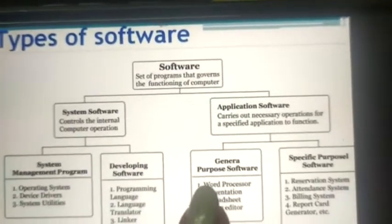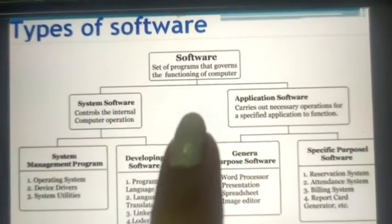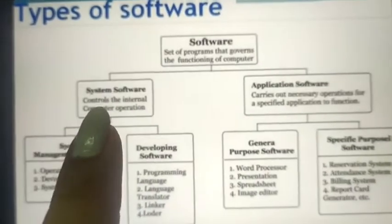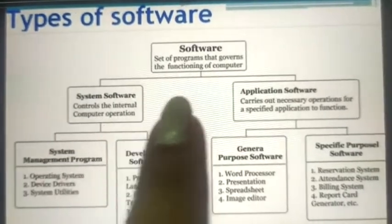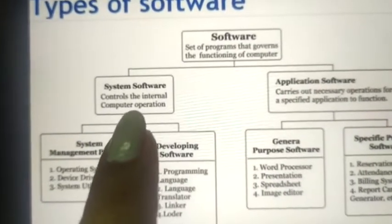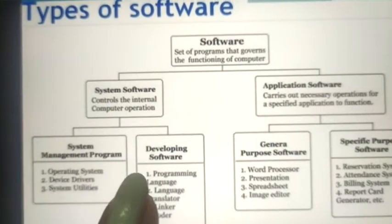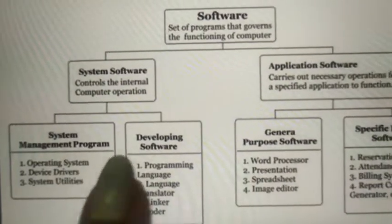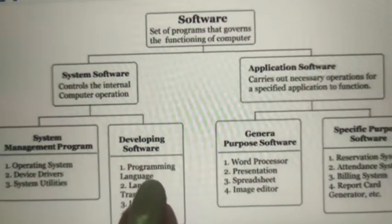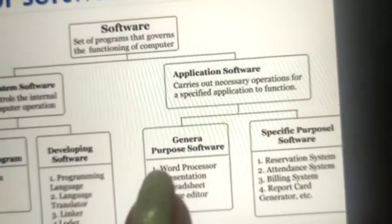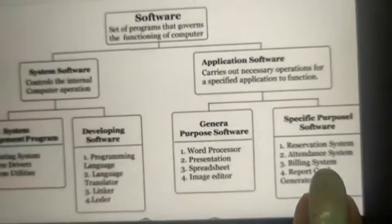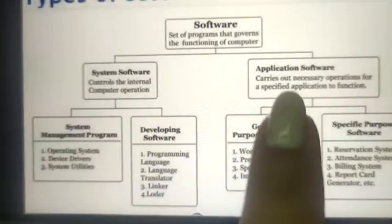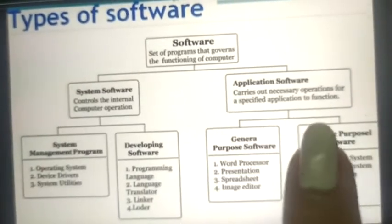You can see this diagram and easily understand how many types of software there are. Software is typically distributed in two parts: system software and application software. System software is also divided into two parts — system management programs and developing software. Similarly, application software is also in two parts — general purpose software and specific purpose software. So basically, software has only two main parts: system and application.